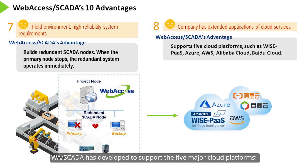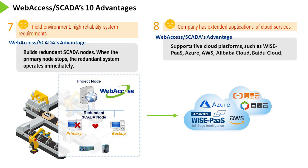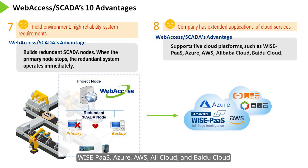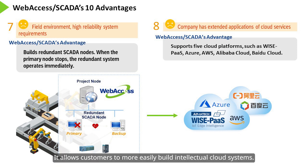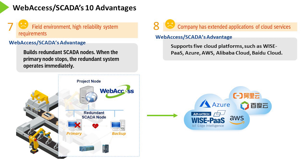If there is a need for cloud service applications, Web Access SCADA has been developed to support five major cloud platforms: Vice Pass, Azure, AWS, AliCloud, and Baidu Cloud. It allows customers to more easily build intelligent cloud systems.